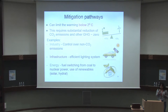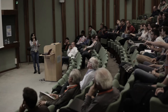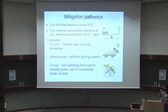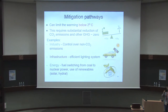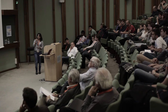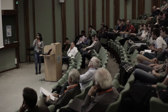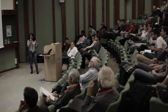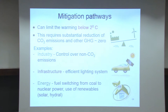My colleagues will talk more about mitigation, but I can give some examples. For the industry sector, we need to control not just CO2 emissions but also other non-CO2 gases contributing to global warming. For buildings, we can have efficient lighting systems to use more renewable resources. A very important factor for mitigation is the energy sector — we need to switch from coal to renewables such as solar, hydro, and also nuclear power.